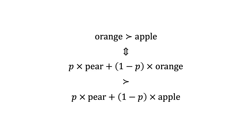Under the axiom of independence, if I prefer oranges to apples, I will prefer a gamble with a 1 minus p equals 50% chance of getting an orange and a p equals 50% chance of receiving a pear, to a gamble with a 1 minus p equals 50% chance of getting an apple and a p equals 50% chance of receiving a pear. That is, if I prefer an orange to an apple, I prefer a 50% chance of an orange and a 50% chance of a pear to a 50% chance of an apple and a 50% chance of a pear.